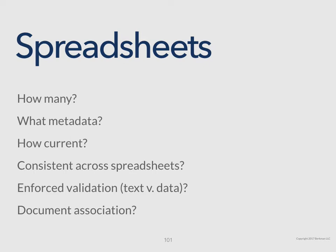Most importantly, and often missing from spreadsheets, is a link or list of the documents associated with the contract — where are the exhibits, amendments, pricing schedules, certificates of insurance, et cetera? They may not be identified on the spreadsheet. It is also very common that the spreadsheet does not even include a reference to the main agreement itself. So basically what you have is a spreadsheet with data about contracts, and document files somewhere else, with no way to link them together if you ever needed to see the details.